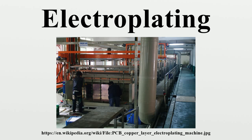The process used in electroplating is called electrodeposition. It is analogous to a galvanic cell acting in reverse. The part to be plated is the cathode of the circuit. In one technique, the anode is made of the metal to be plated on the part. Both components are immersed in a solution called an electrolyte containing one or more dissolved metal salts.